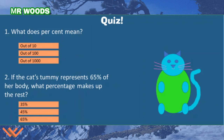Quiz time. I want you to think about these — maybe write it down on a piece of paper. You can pause the video to go over this. Number one: what does percent mean? Out of 10, out of 100, or out of 1000? Well, I purposely wrote it as 'per cent' — because 'per' means out of, and 'cent' — you remember century — a century is 100 years. So it's definitely out of 100.